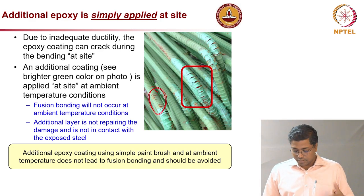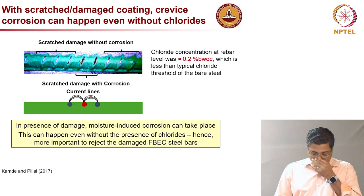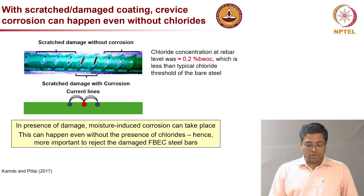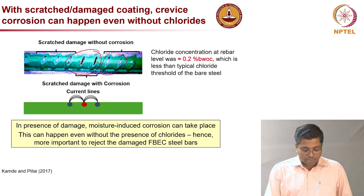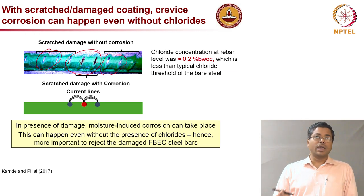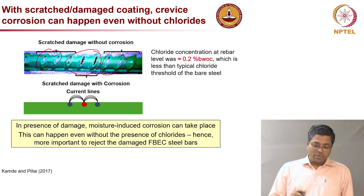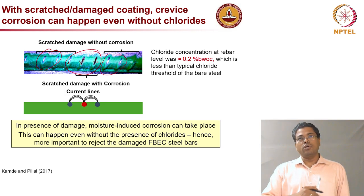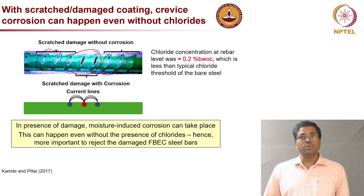If there are damages like scratches on the rebar, some scratches will tend to become anodes and the remaining will function as cathodes and not corrode. This creates localized corrosion, which would not be the case with an uncoated rebar where corrosion happens more uniformly. The chances of localized corrosion are very high with damaged coated rebars, and that is something which we need to be worried about.